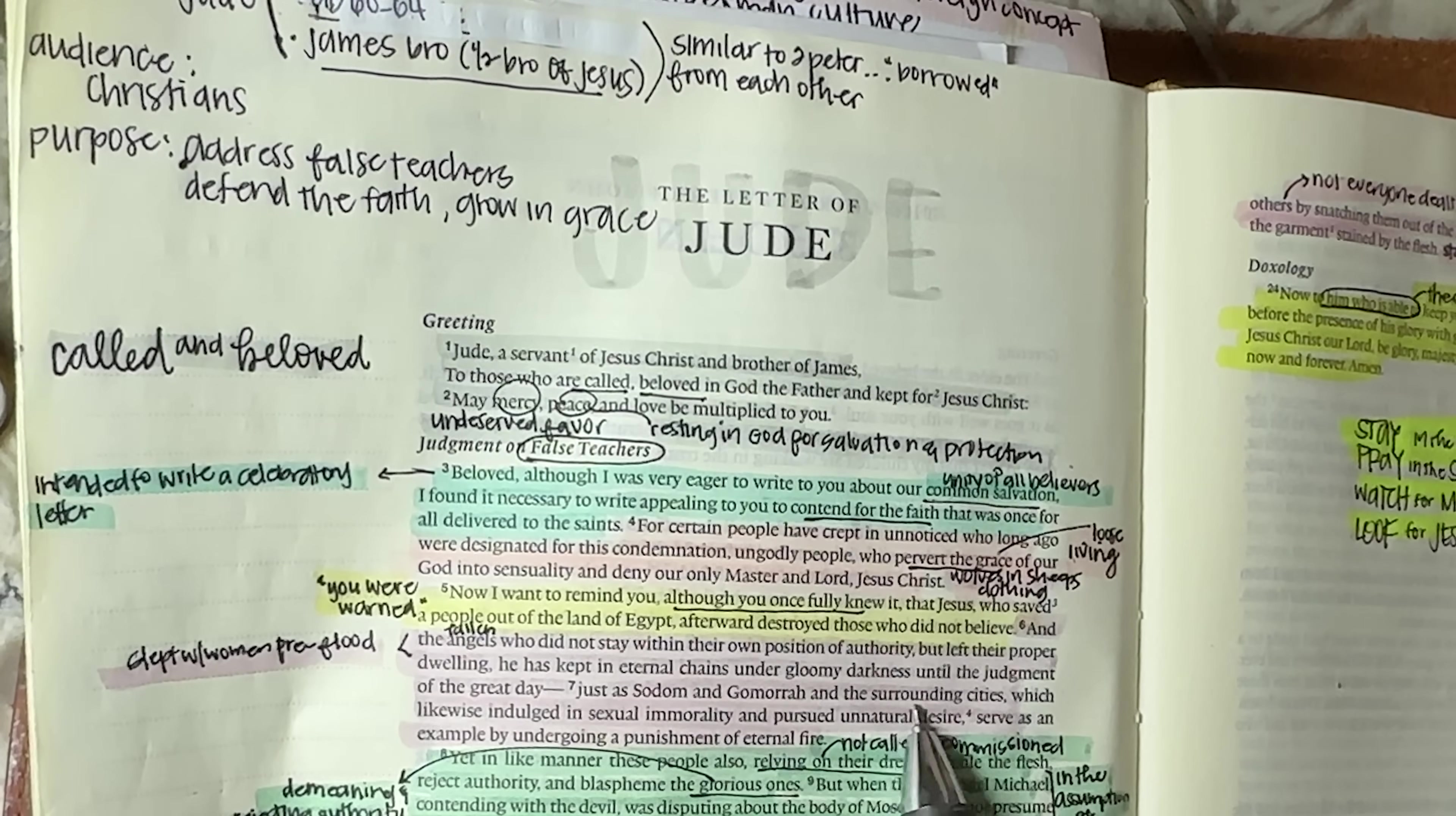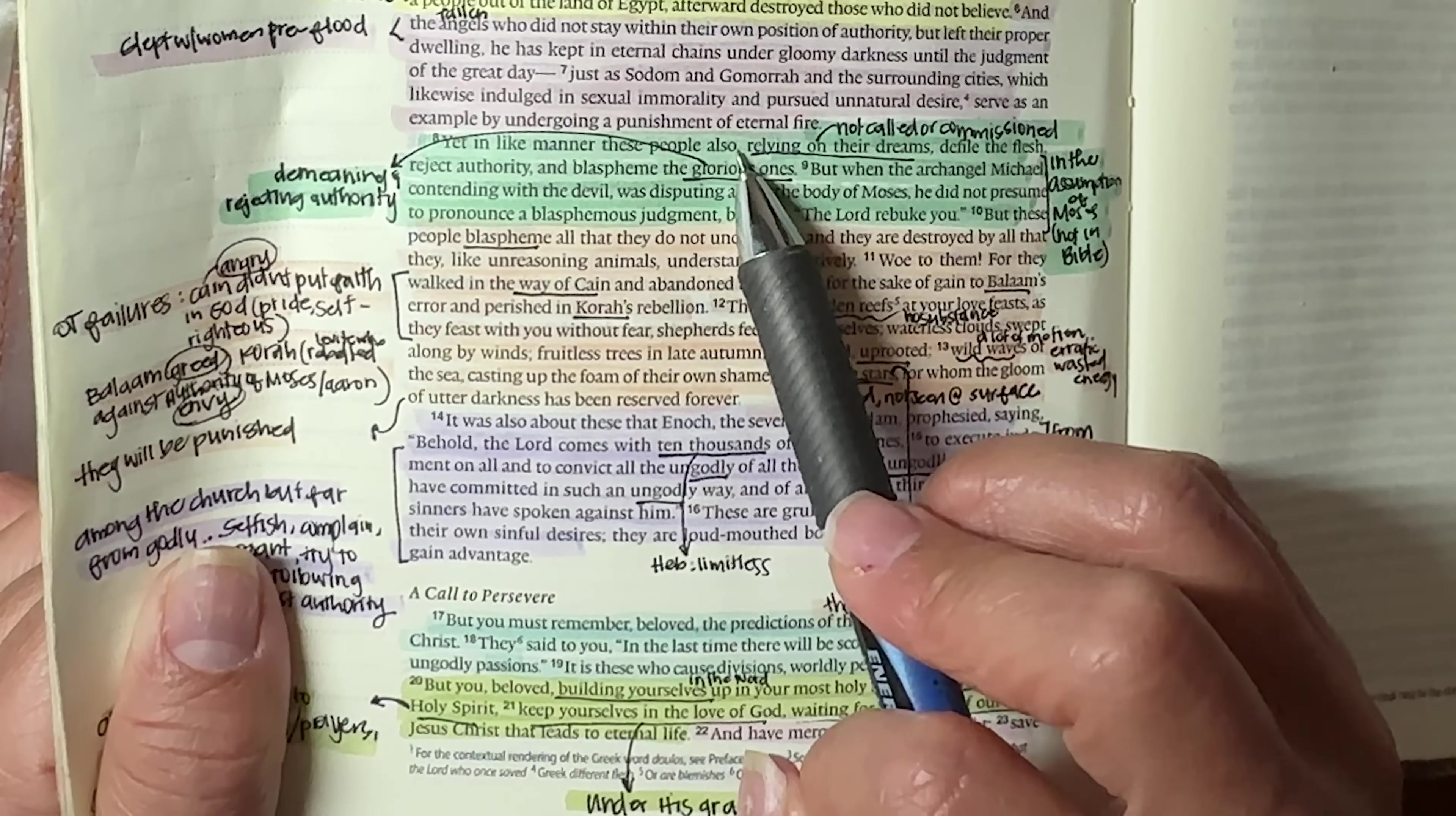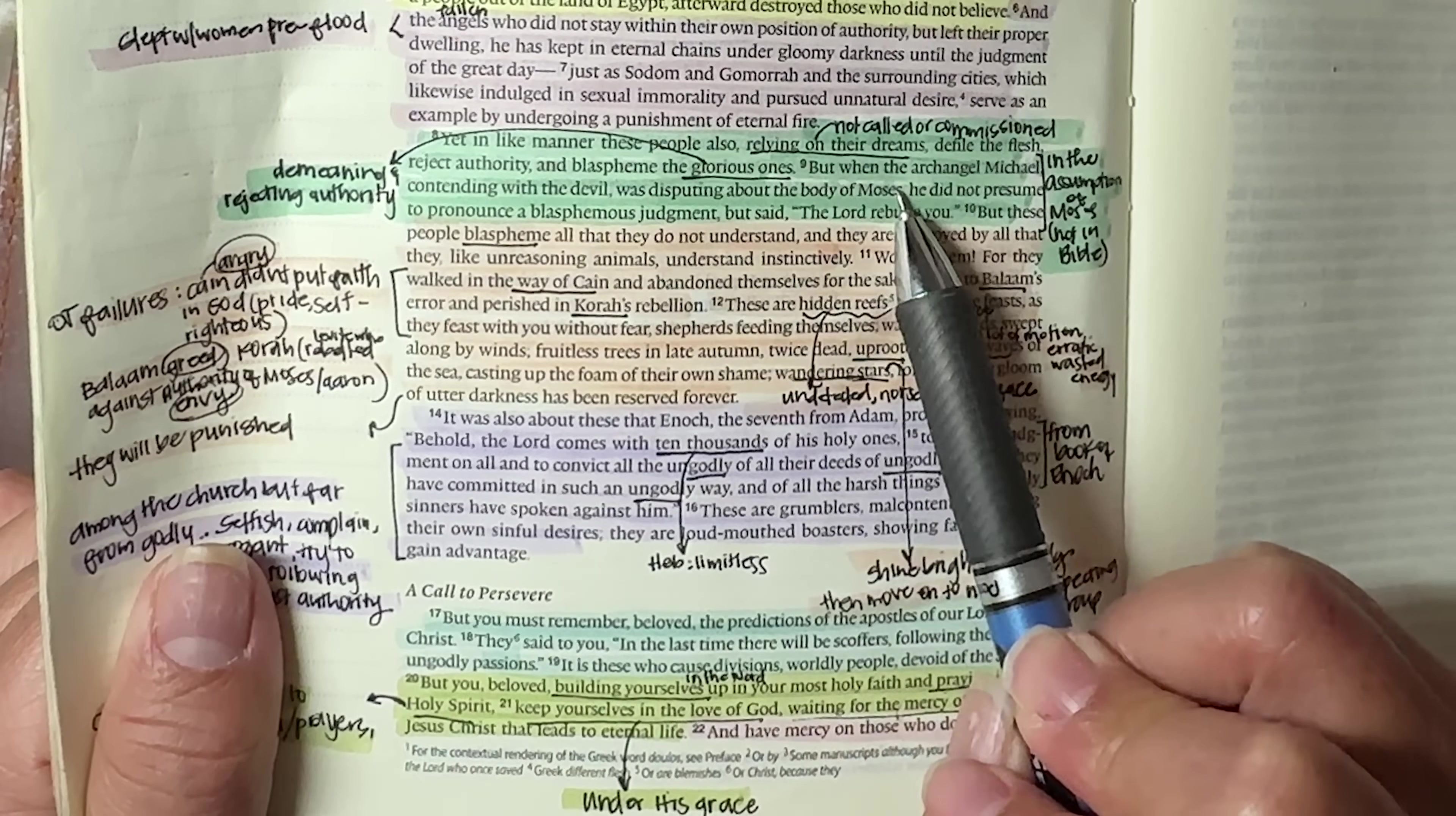just as Sodom and Gomorrah and the surrounding cities, which likewise indulged in sexual immorality and pursued unnatural desire, serve as an example by undergoing a punishment of eternal fire. Yet in like manner, these people also relying on their dreams. So they are not people who are called, they're not commissioned. They are simply relying on their own idea that they are spiritual, defile the flesh. They reject authority and they blaspheme the glorious ones. So they are not only demeaning to Christians, but also to those in authority.